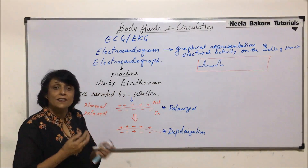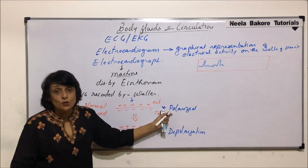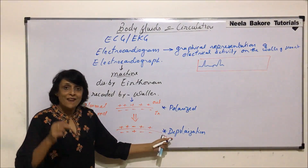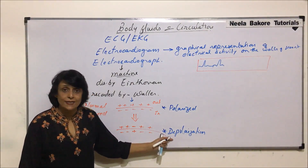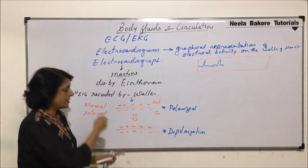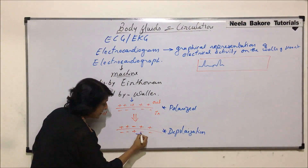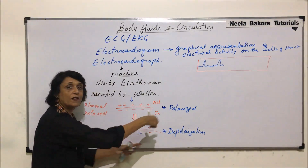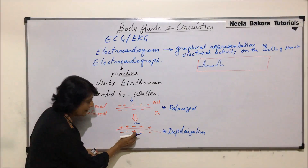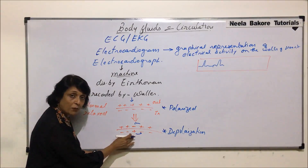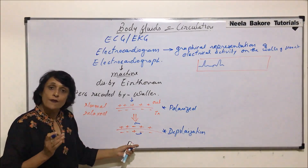Depolarization means reversal of charge. In the normal resting situation it is polarized, and when it receives a stimulus it gets depolarized. After depolarization, the charge is going to move in a loop — it gets attracted and keeps moving. After this, the depolarization shifts, and we say it is moving — that is conduction of impulse.